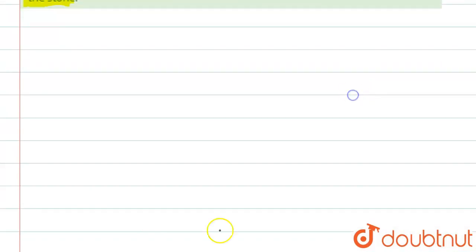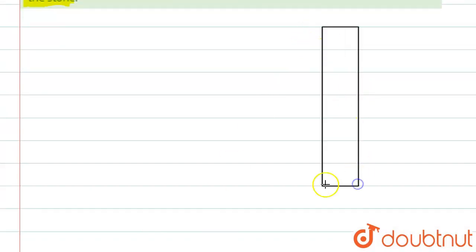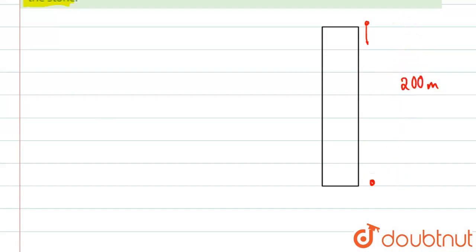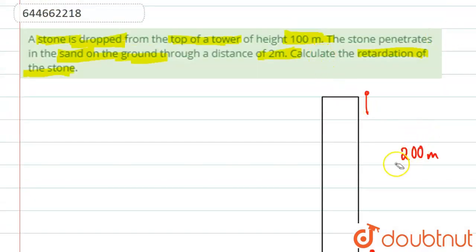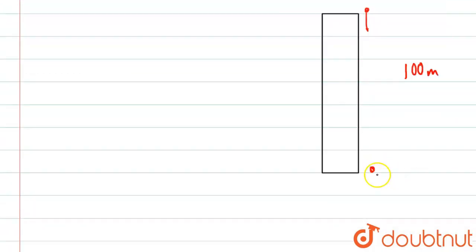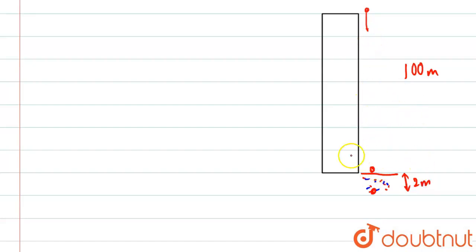Let's say this is the tower, and from the top of the tower to the bottom, the stone comes down with gravitational acceleration over 100 meters. The height of the tower is given as 100 meters, and over here it starts decelerating due to the sand, finally stopping at a distance of 2 meters. So the acceleration is different in this second phase.